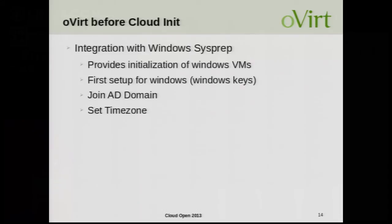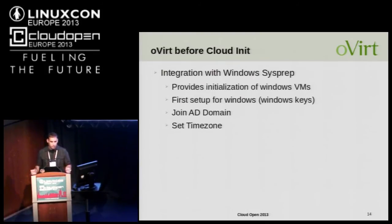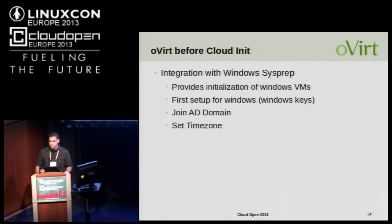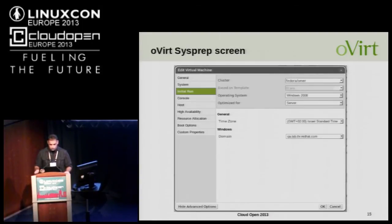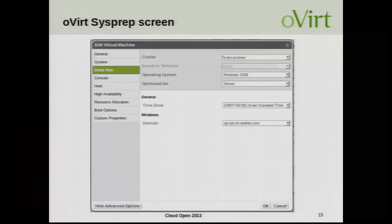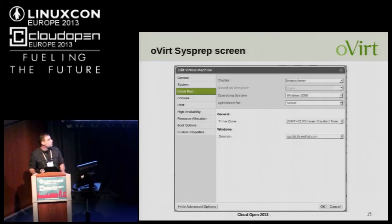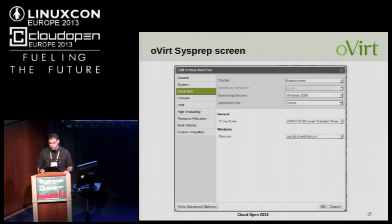Back to cloud-init. What did oVirt have before cloud-init? oVirt had integration only with Windows Sysprep — a way to configure Windows VMs on boot, allowing you to set the Windows key, Active Directory domain, and timezone. We had this integration from the beginning, but as you can see it's pretty simple and only for Windows VMs. Now we were missing something similar for Linux — this is where cloud-init comes in.